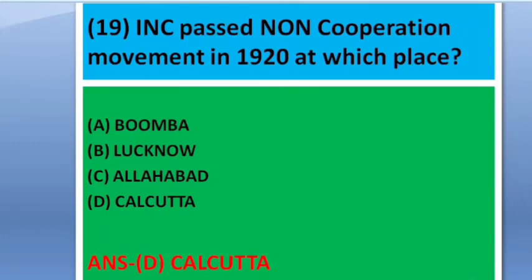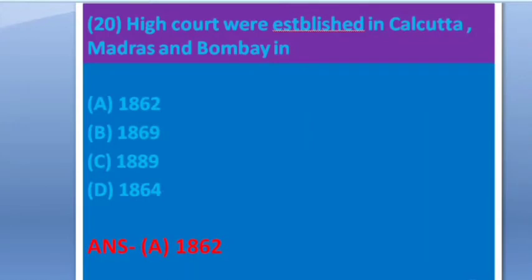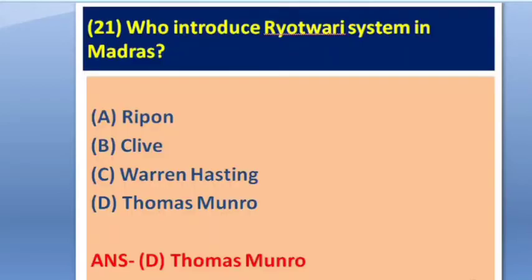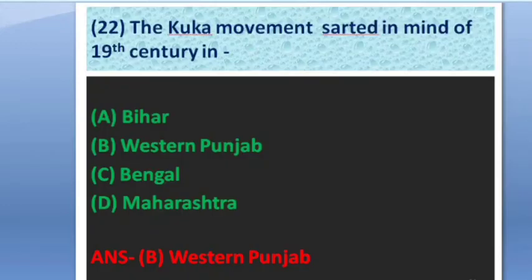Question 90: The INC passed the Non-Cooperation Movement in 1920 at which place? Options: Bombay, Lucknow, Allahabad, Calcutta. The answer is Calcutta. Next question: High Courts were established in Calcutta, Madras, and Bombay in 1862. This is a most important question. Next question: Who introduced the Ryotwari system in Madras? The answer is Thomas Munro.